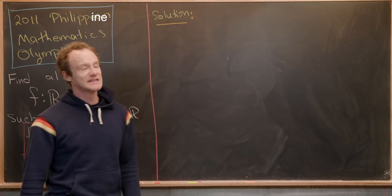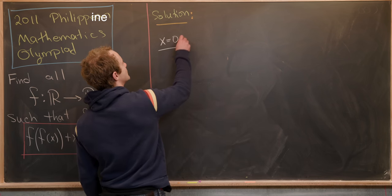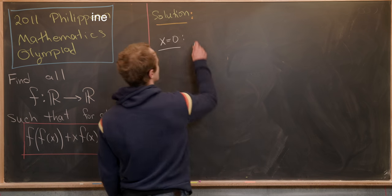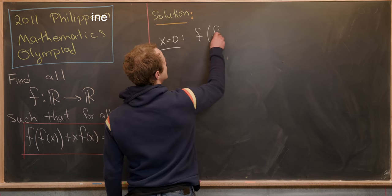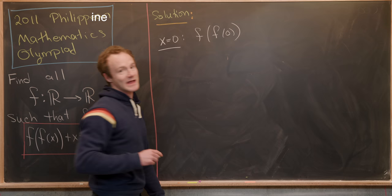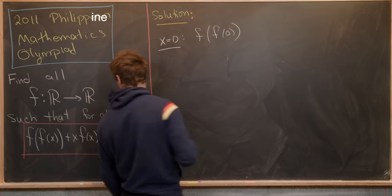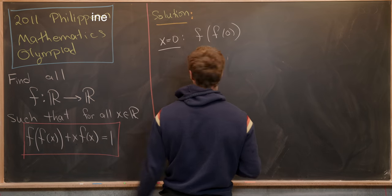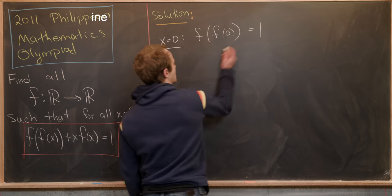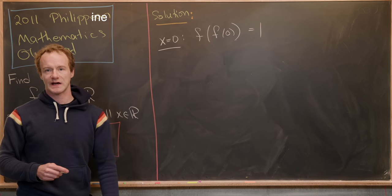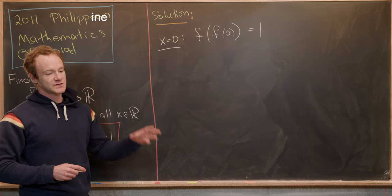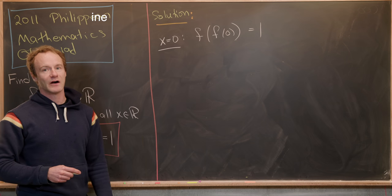Okay, so let's see what we get if we set x equal to 0. So x equal to 0 into the functional equation gives us f evaluated at f(0) + 0·f(0) = 1. But we can clearly get rid of that 0·f(0). So we immediately have a value for the function.